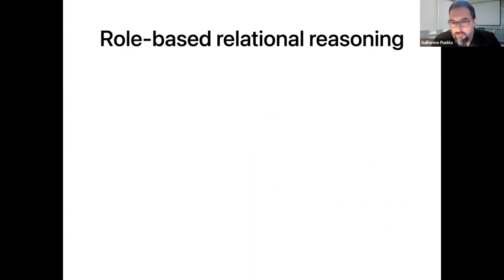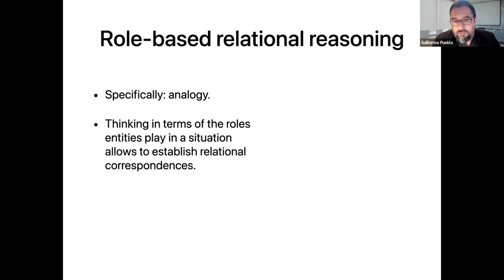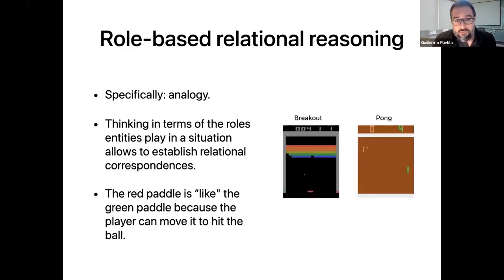My colleagues and I have proposed that relational reasoning — specifically analogy — is the main driver of this kind of generalization. This is because thinking in terms of the roles that entities play in a situation allows us to establish relational correspondences or mappings across different situations. For example, across these two games, the red paddle in Breakout is like the green paddle in Pong because the player can move it to hit the ball.